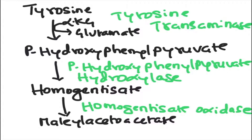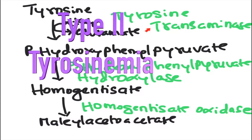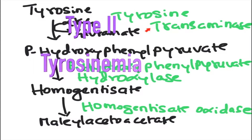Before discussing how maleylacetoacetate is converted further, let me give some applied aspects. If there is any defect or deficiency of tyrosine transaminase, that will give rise to a disorder called type 2 tyrosinemia, which is also referred to as oculocutaneous tyrosinemia.